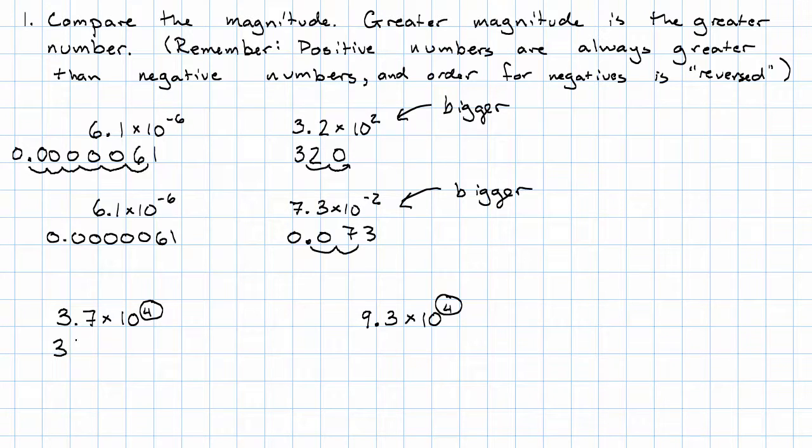All right, 3.7. I want to move the decimal point 1, 2, 3, 4 places to the right.